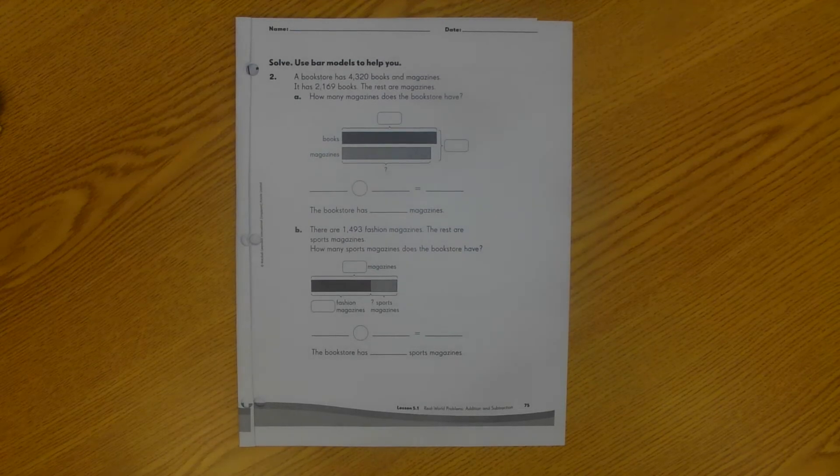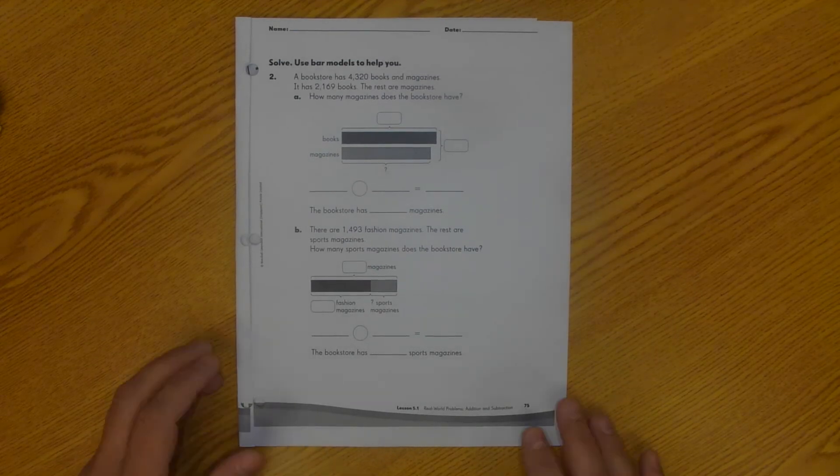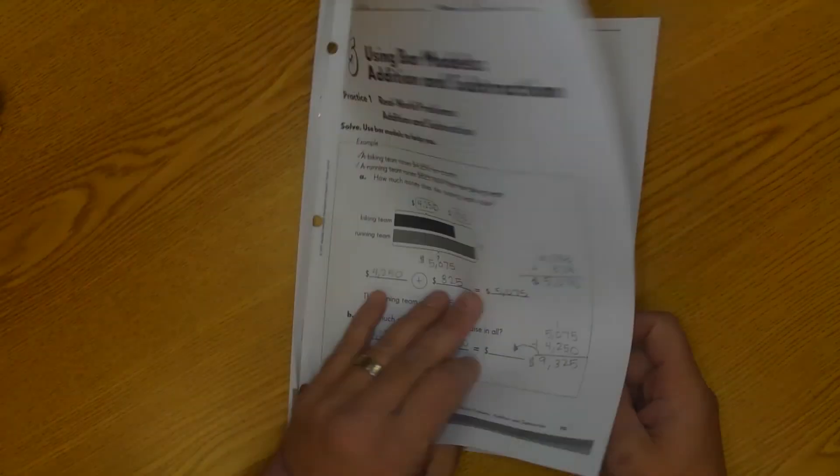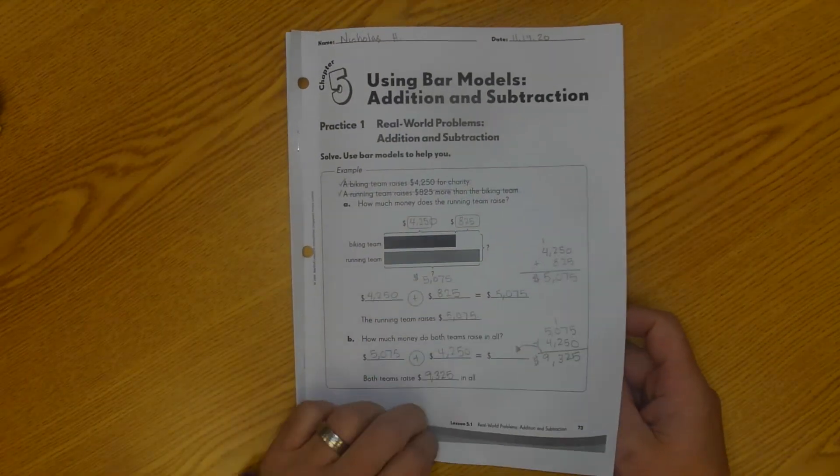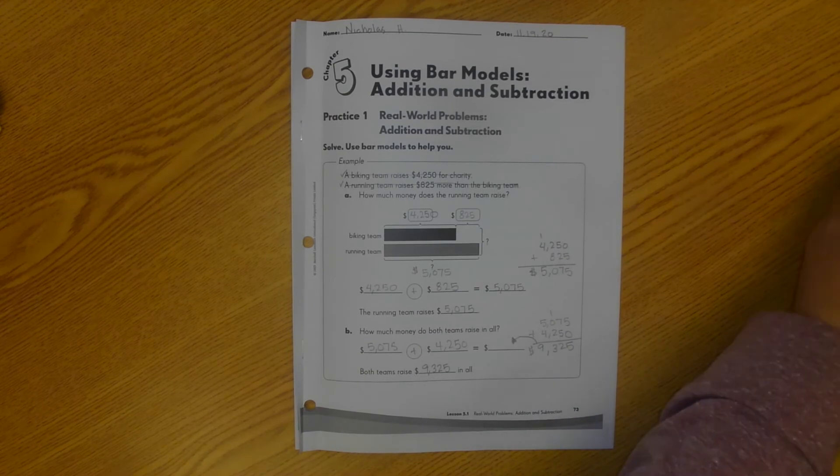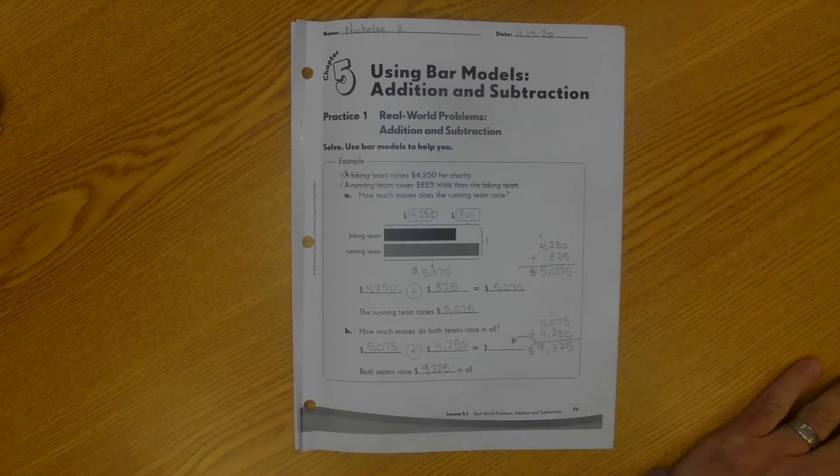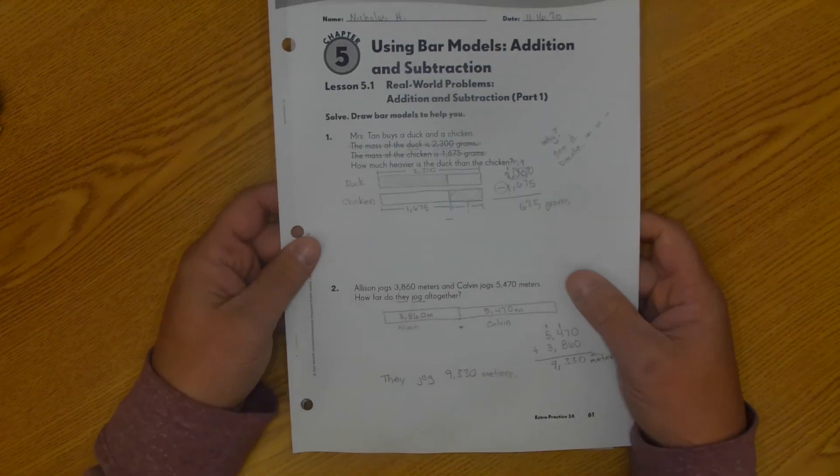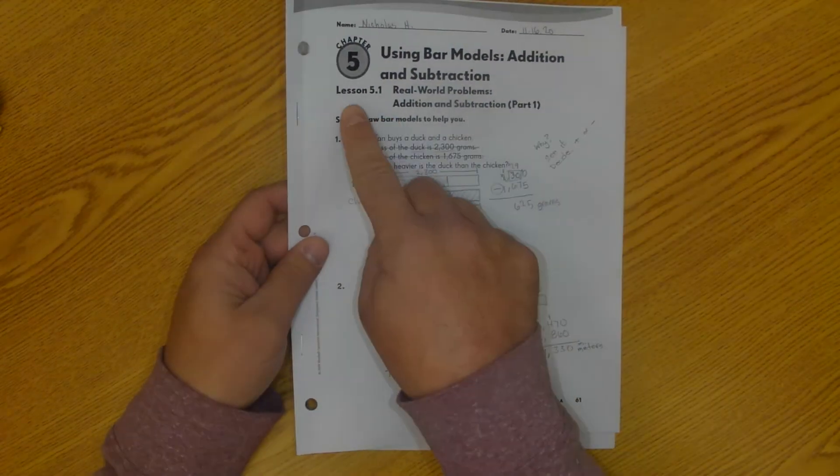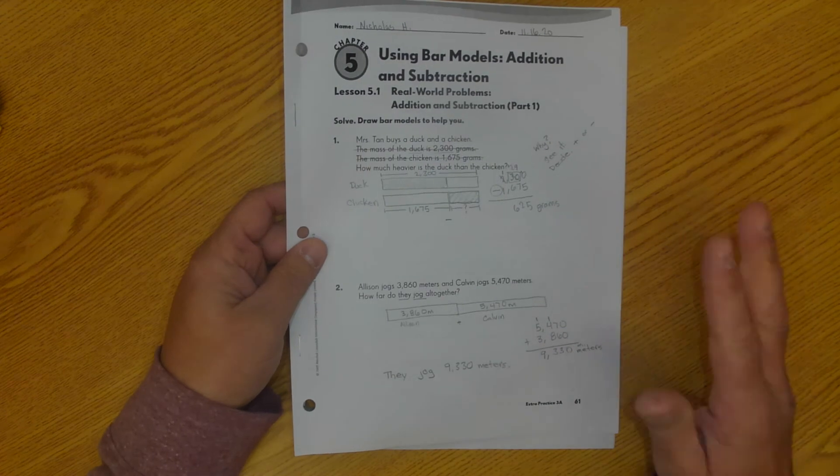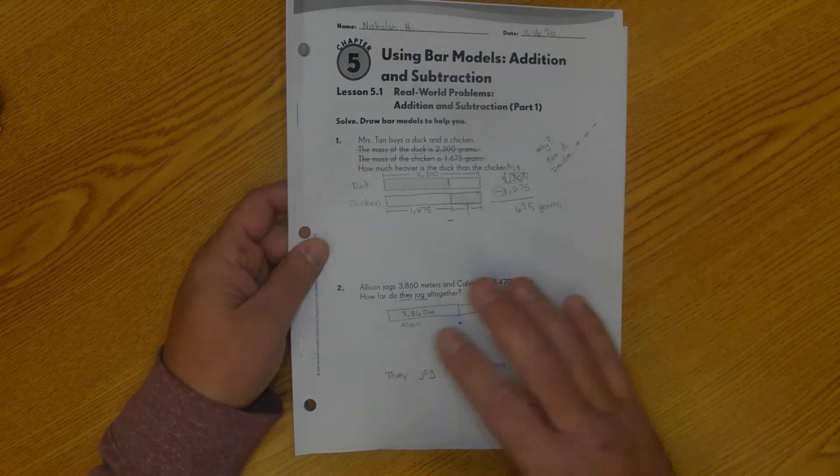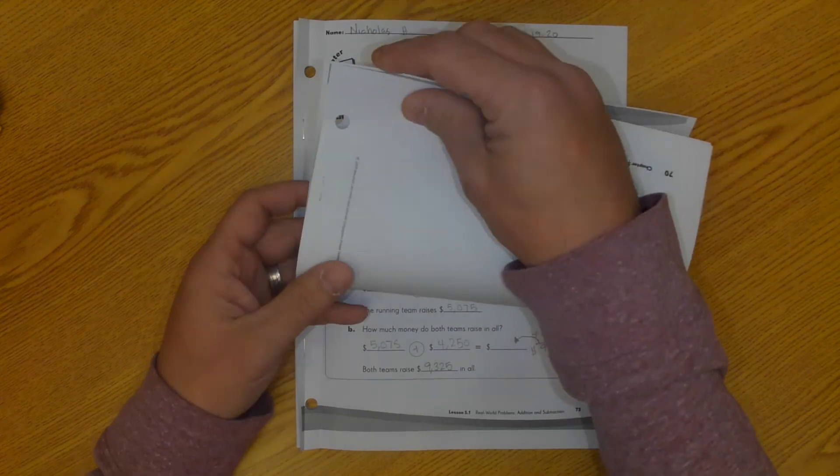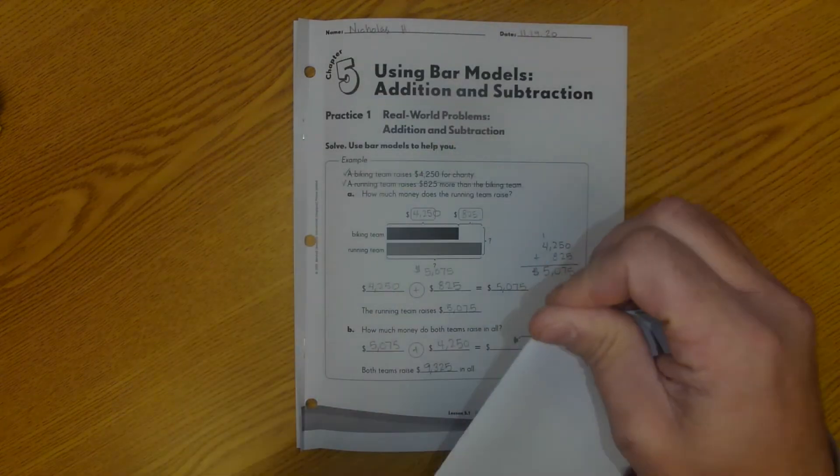Hi kids, this is Mr. Alikovic. We are working on bar modeling. Today is December 1st and this is the cover of my packet. So right now I'm going to tell you about this packet, this using bar models addition, the one that says less than 5.1 here. You don't need that anymore. We're just going to go ahead and get rid of that one.